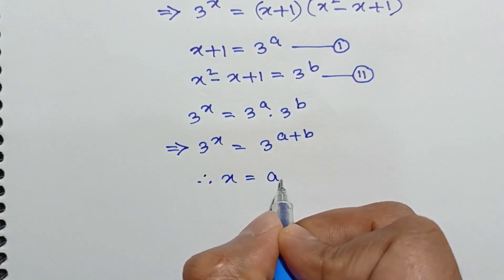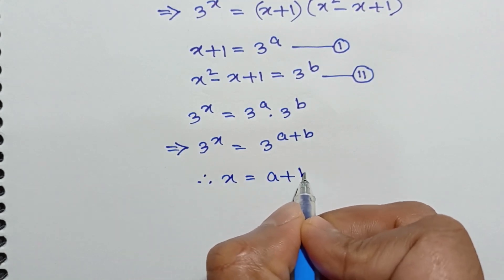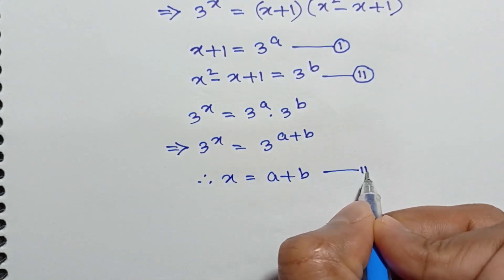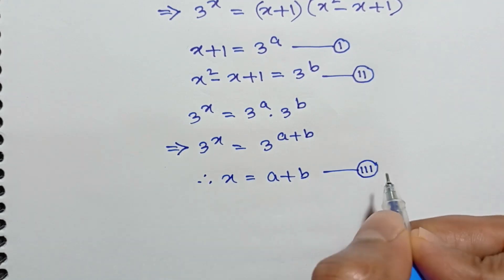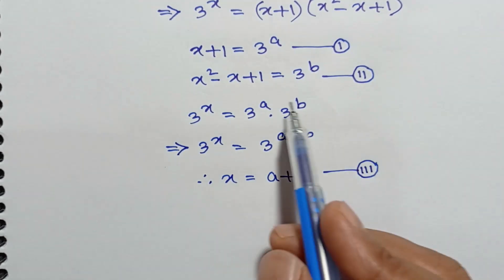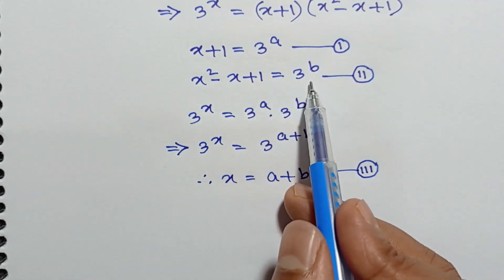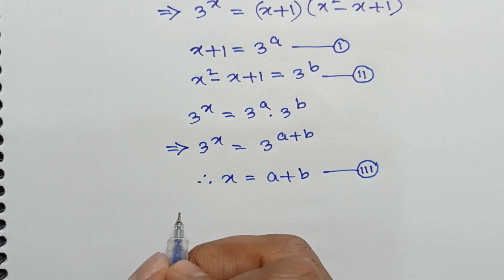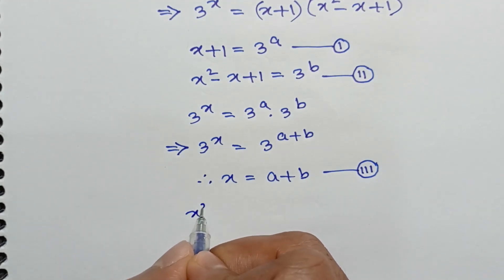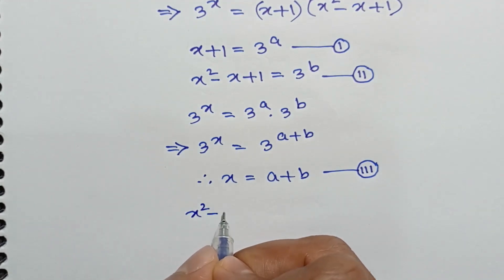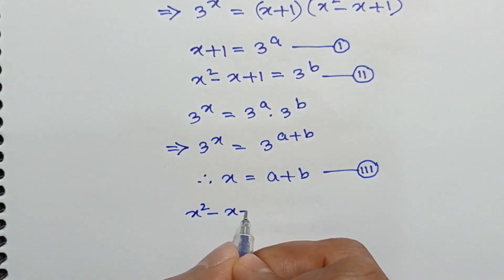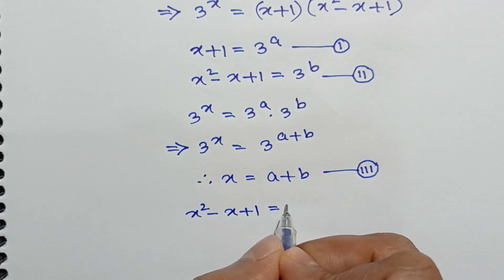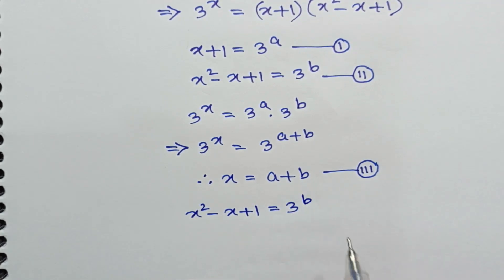So 3 to the power x is equal to 3 to the power a plus b. Here the bases are the same, so the powers will be equal, giving x is equal to a plus b — call this equation number 3. From equation 2 we have x square minus x plus 1 is equal to 3 to the power b.